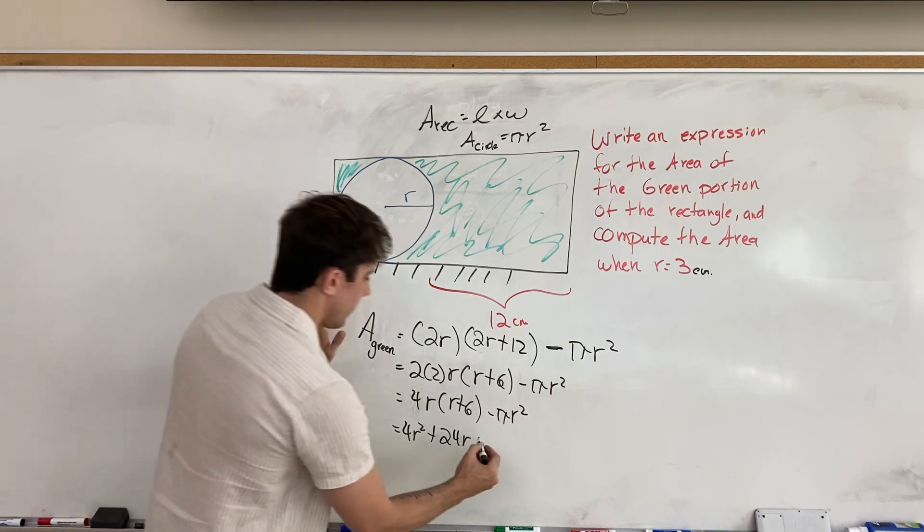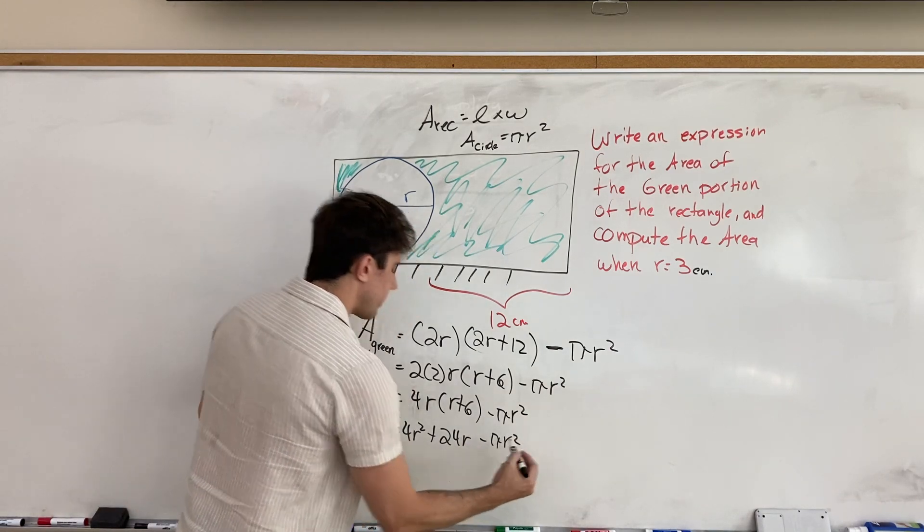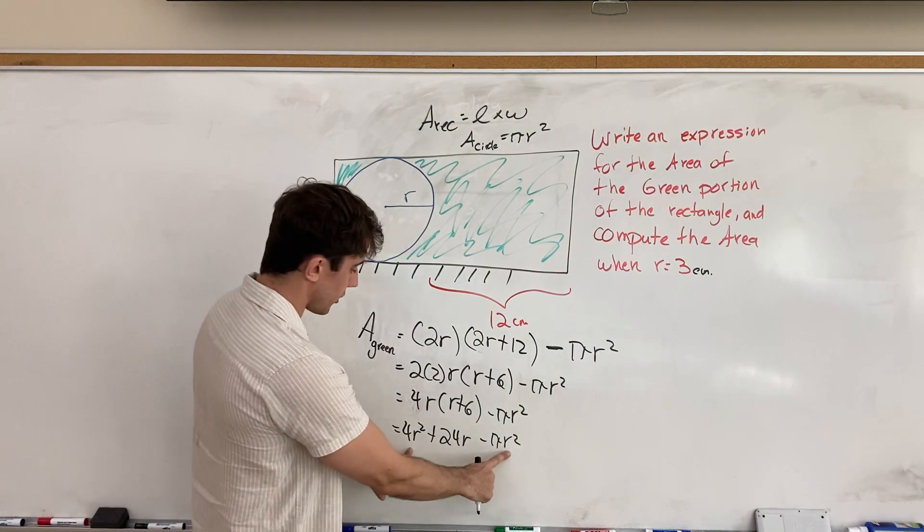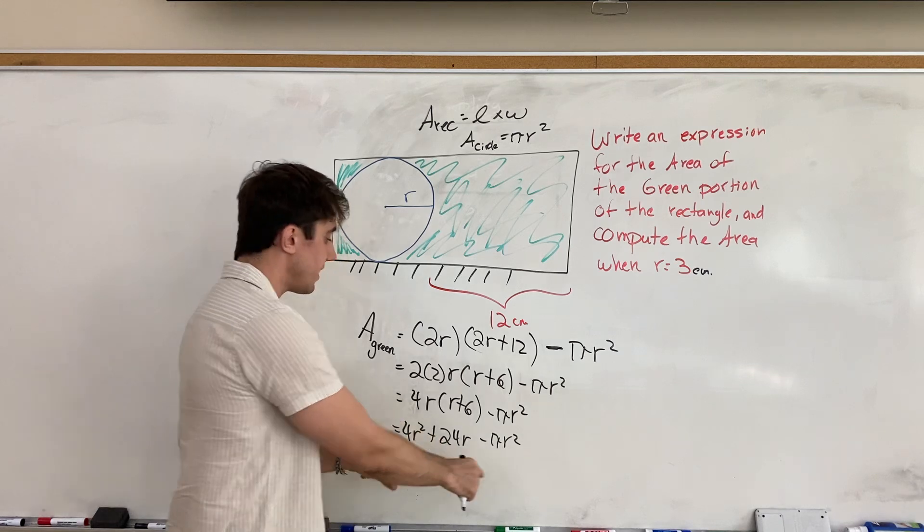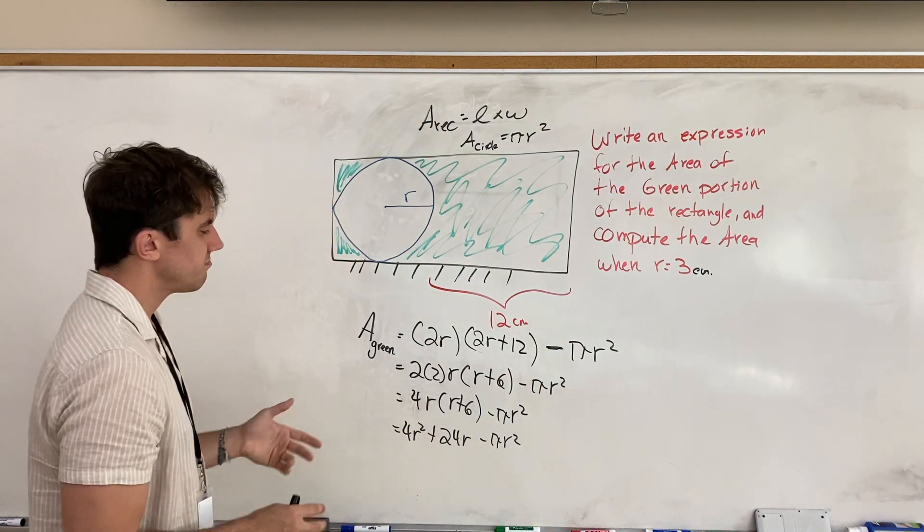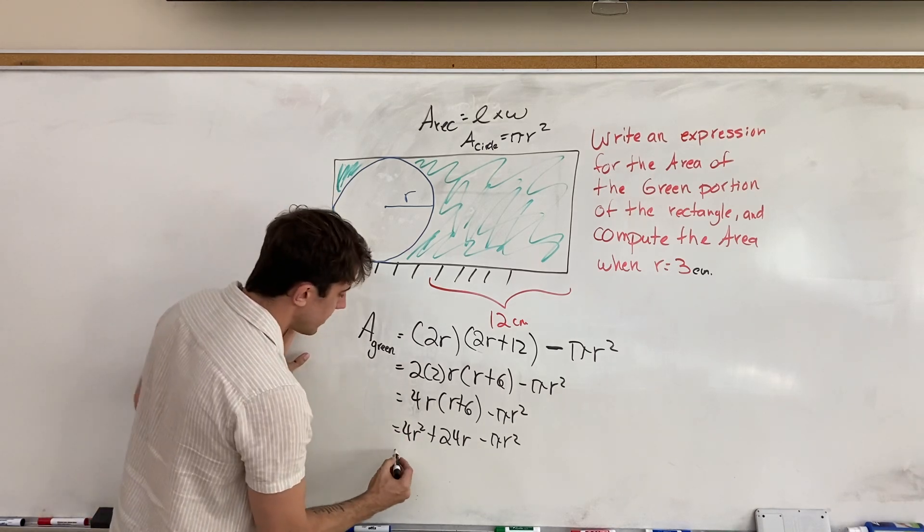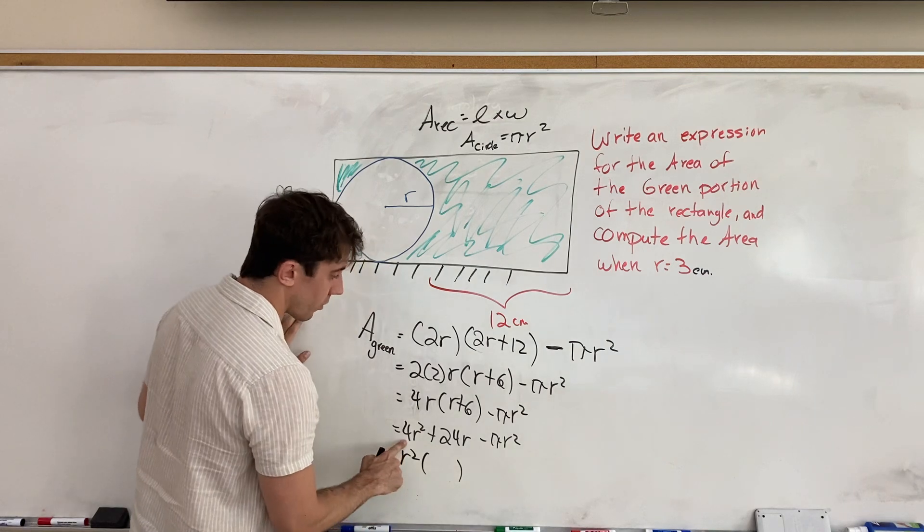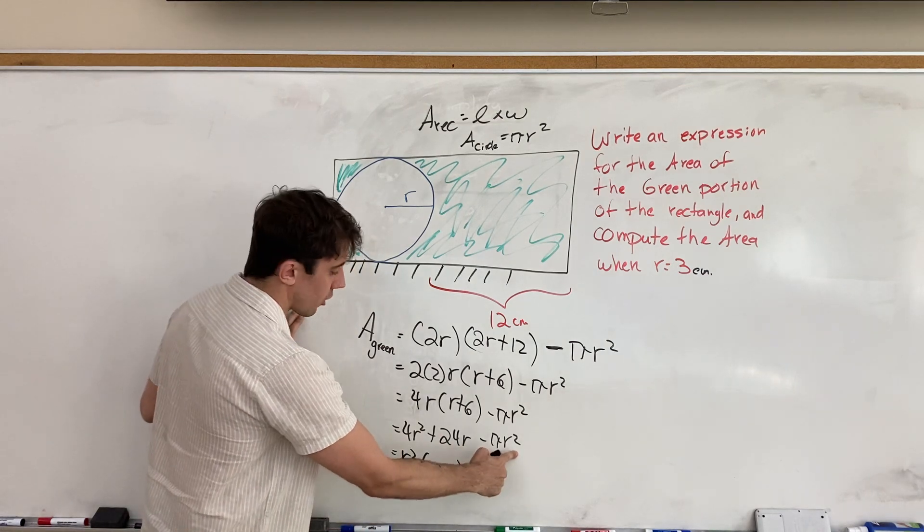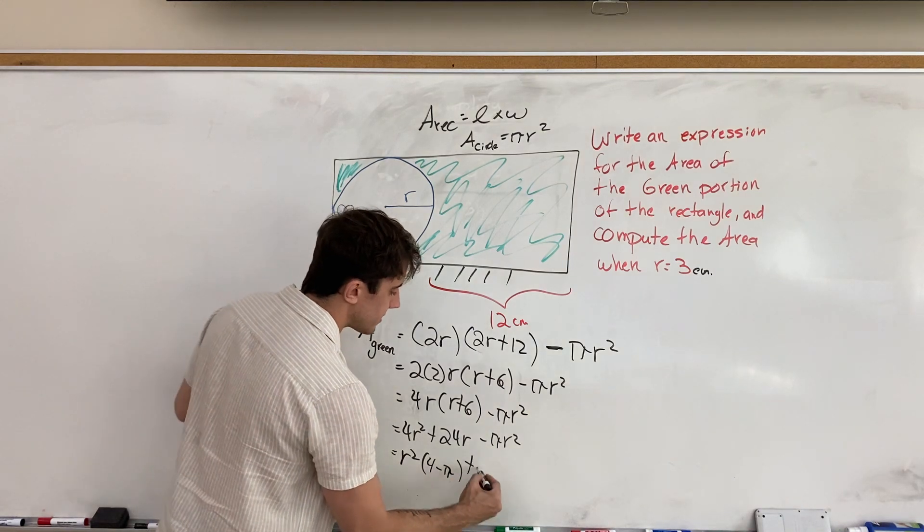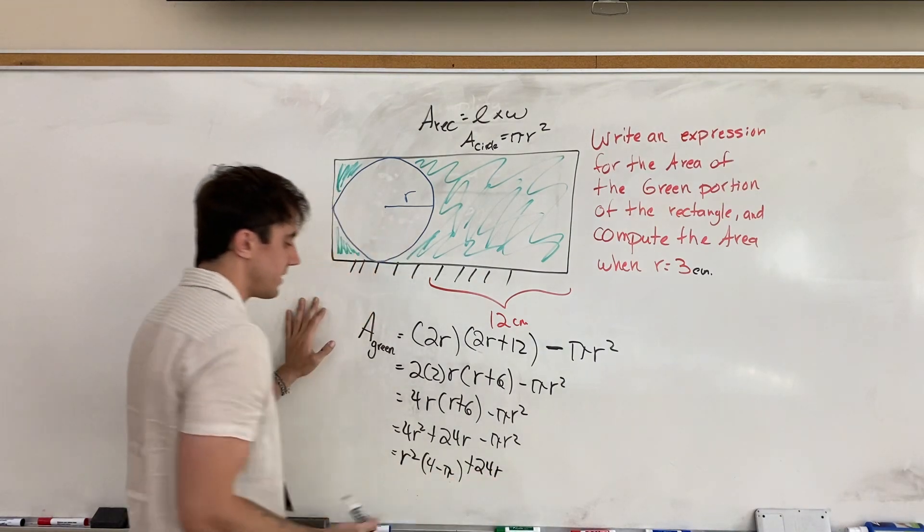So, we can carry this through, minus pi r squared. And now, you could even leave it like this, but you might notice that these two terms are both r squared. And so, we could factor out r squared. Not really necessary, but we could do it. So, we could do r squared bracket 4 minus pi, factoring r squared from these two terms, 4 minus pi, and then still having the plus 24r at the end.